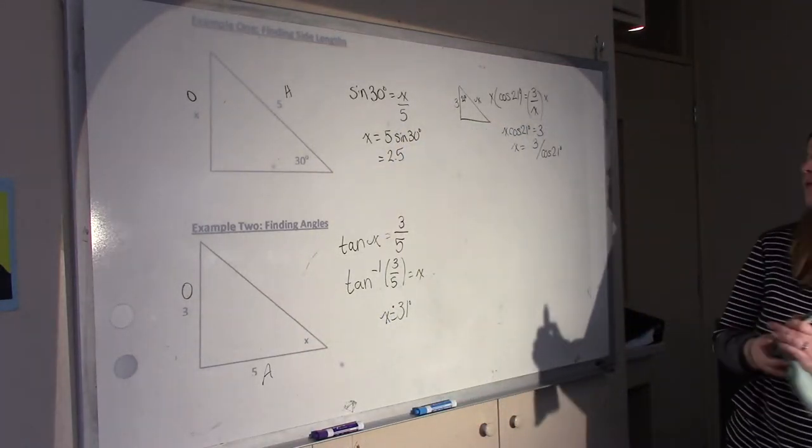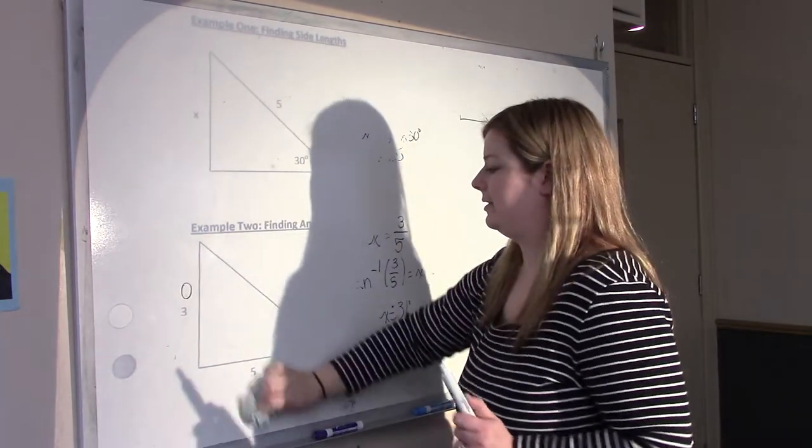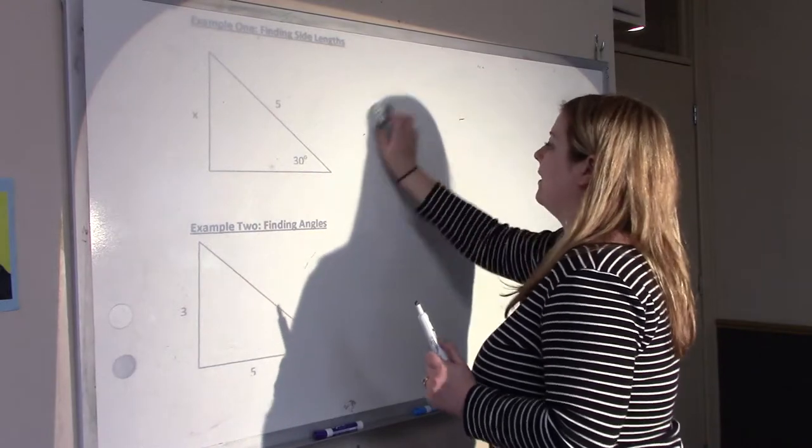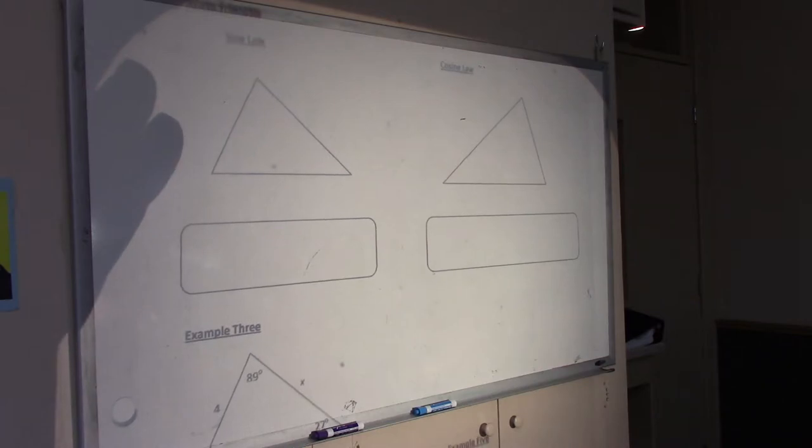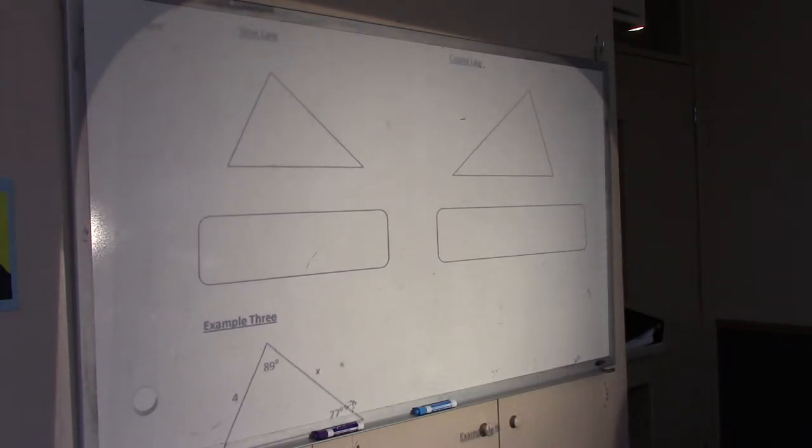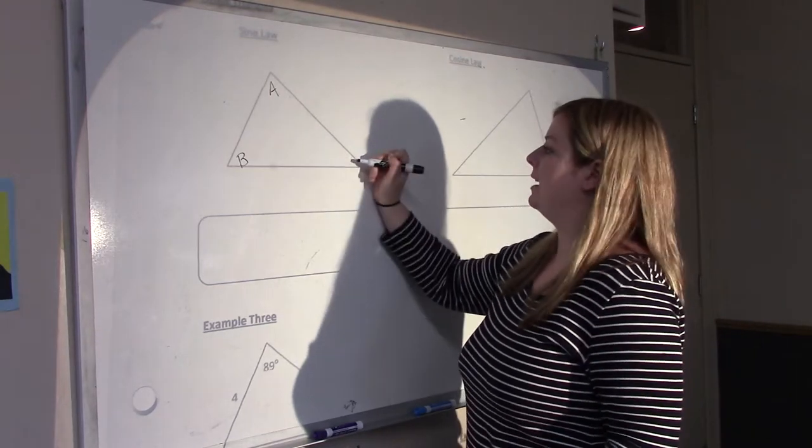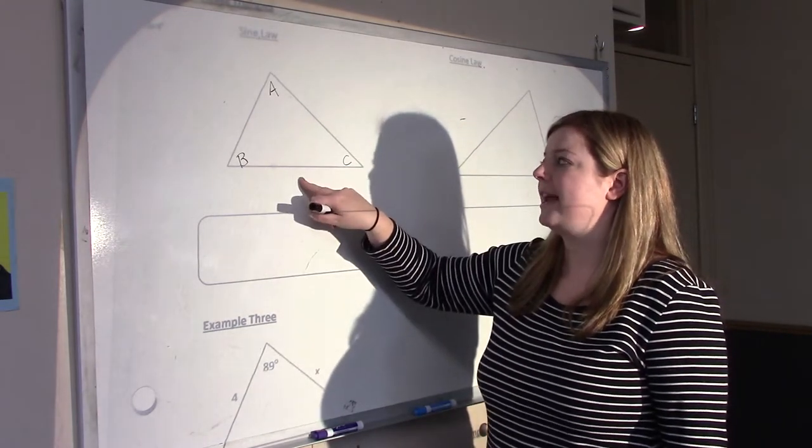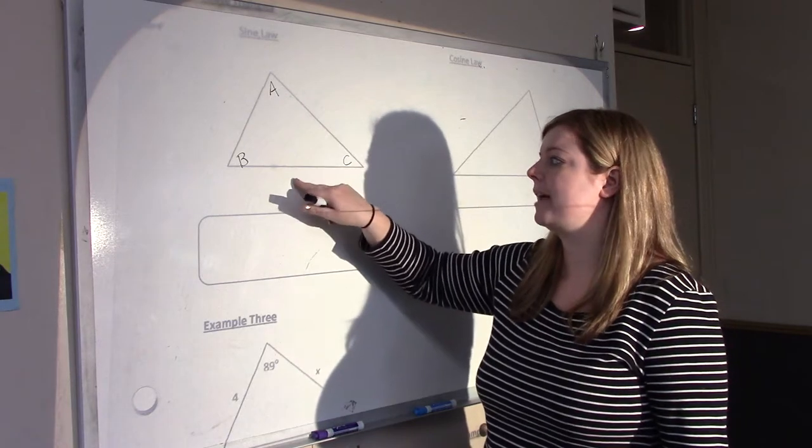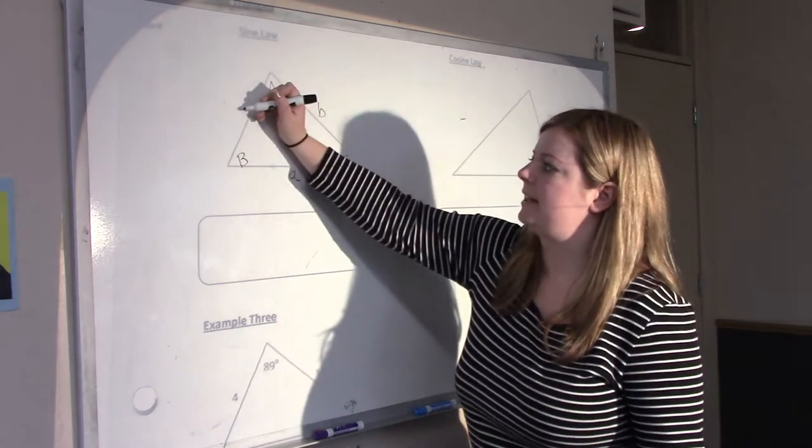So you need to be an expert in using SOHCAHTOA to find side lengths and to find angles. That's your first task and that's always used in any right triangles. But if you don't have a right triangle, then you can use either sine law or cosine law. So to start with sine law and cosine law, you first have to label this properly. So we usually label the angles with capital letters. So let's do A, B, and C. And then we label the side lengths with the same letter that are across from the angles. So here's angle A. So across from angle A is little side B. And across from angle B is little B, side length B. Across from C is C.